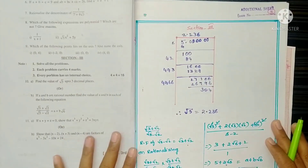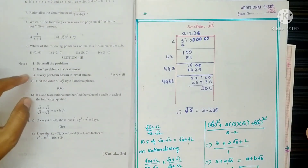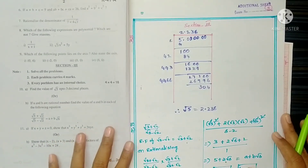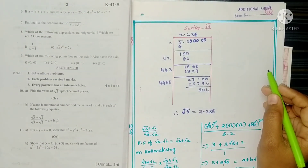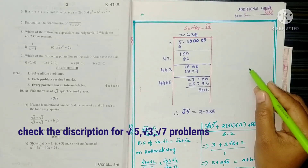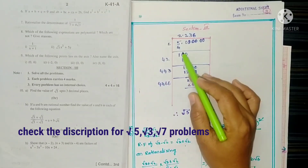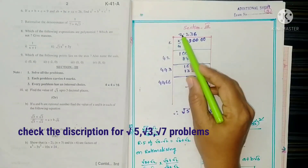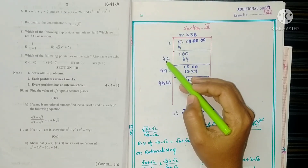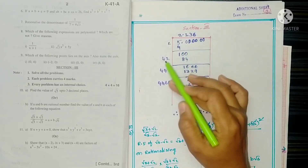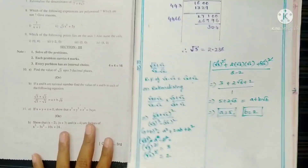Section 3 — four marks questions. Question 10a: Find the value of √5 up to 3 decimal places. Use the long division process. Start with 2, double the quotient to get 4, bring down two digits to get 42, then 84, and continue the process to find √5 to 3 decimal places.